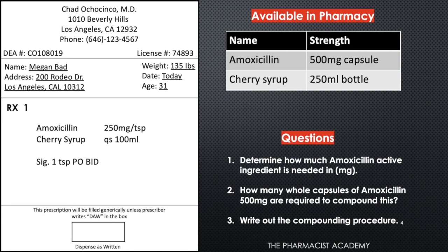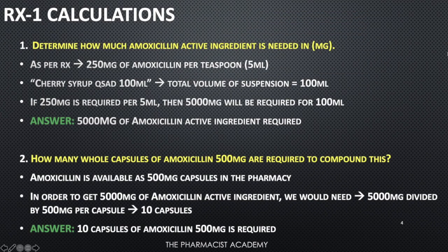For this video I'll be going through questions one to five. This is exactly how prescriptions will look: the doctor's information on top, patient's information including weight in the middle, and in the body of the prescription the information required to compound the suspension. On the top right there's a table of what's available in pharmacy — what the doctor ordered versus what you have to work with.